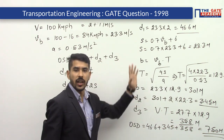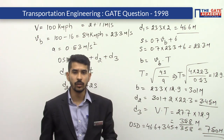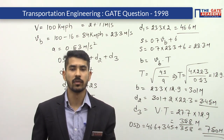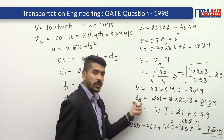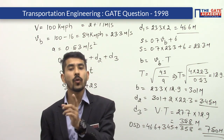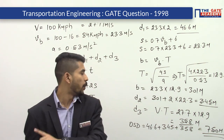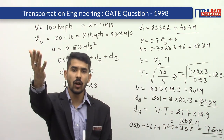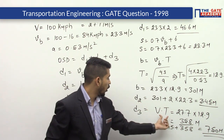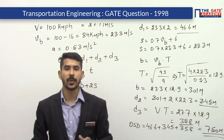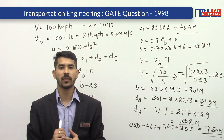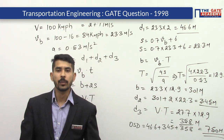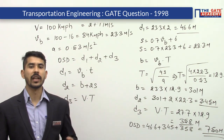To summarize: d1 is the distance traveled by the overtaking vehicle during the reaction time, d2 is the distance traveled by the overtaking vehicle during the overtaking operation capital T, and d3 is the distance traveled by the oncoming vehicle during the overtaking operation. The summation of d1, d2, and d3 gives the overtaking sight distance, which in this GATE 1998 question comes out to be 750 meters.